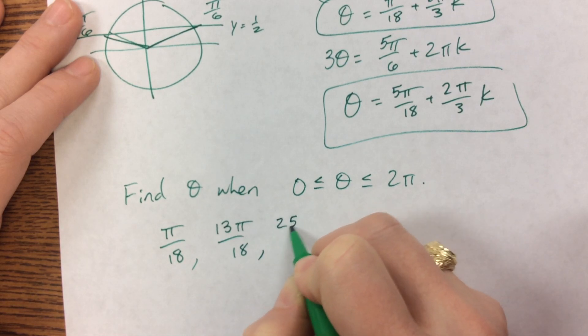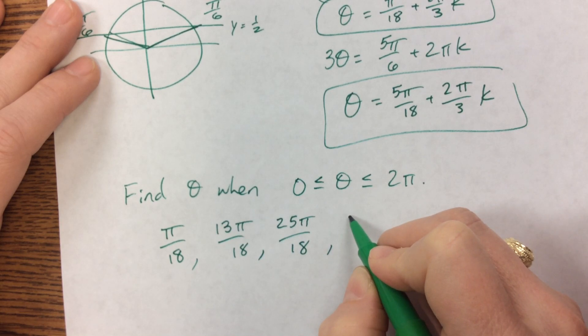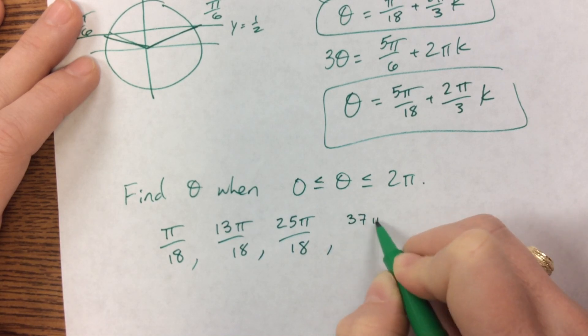I can add 12 pi again. Once I add, if I add 12 pi another time, I'm at 37 pi over 18.